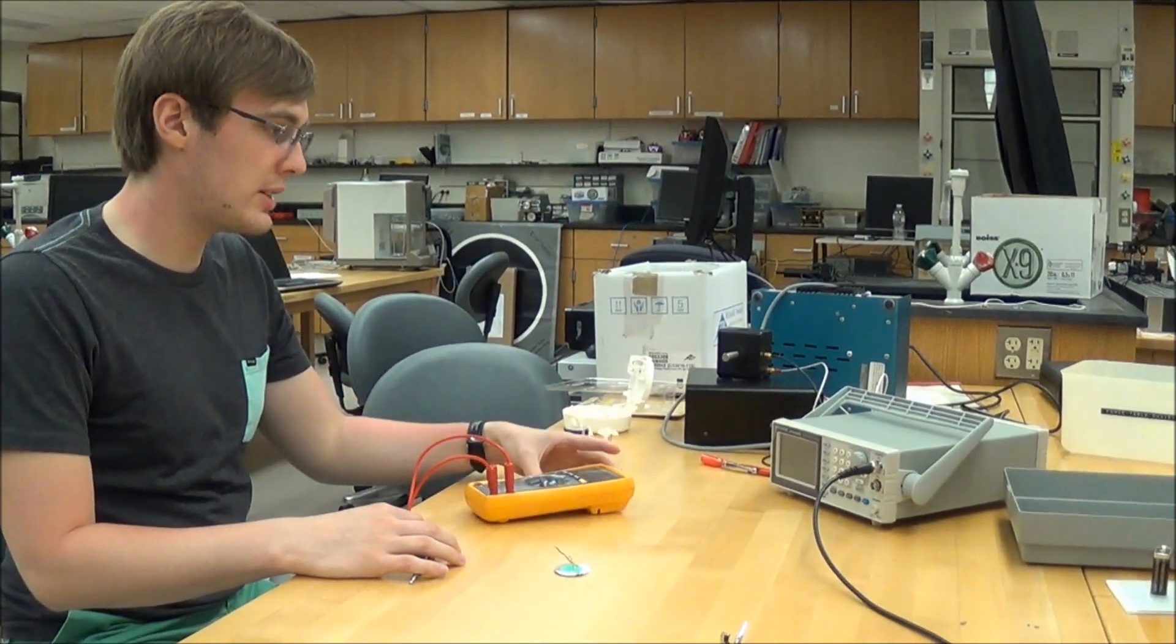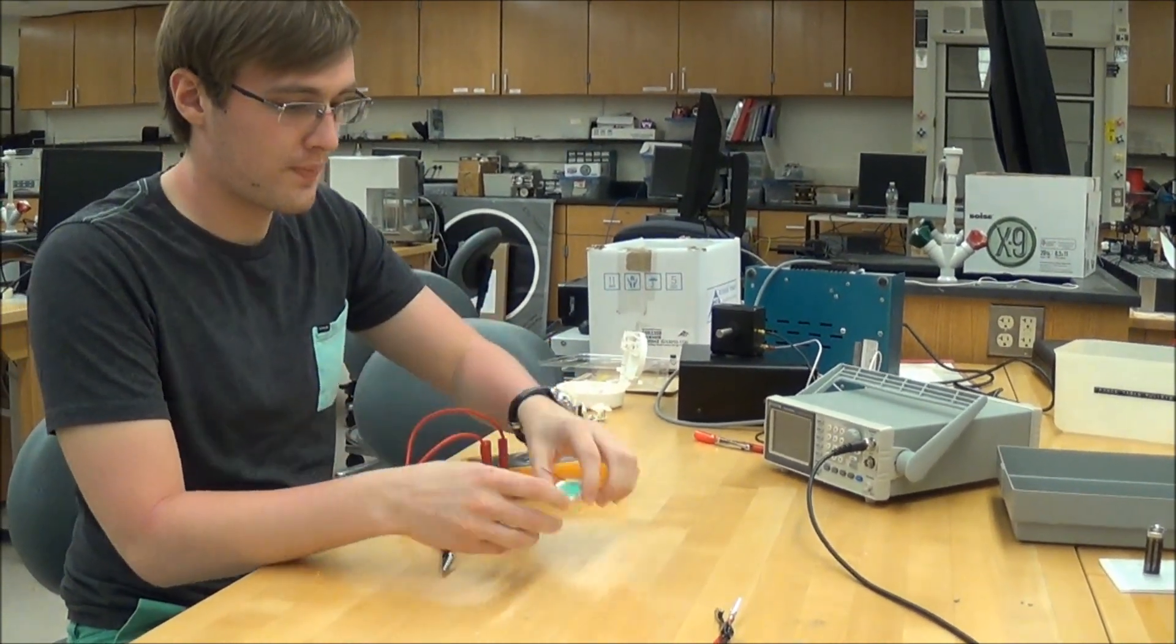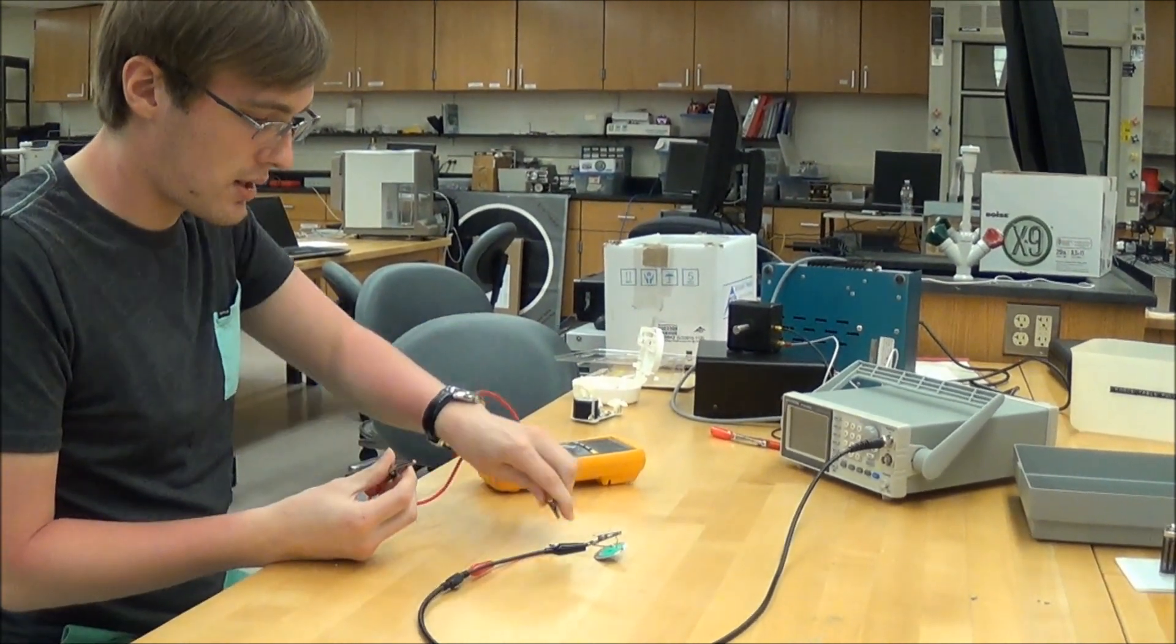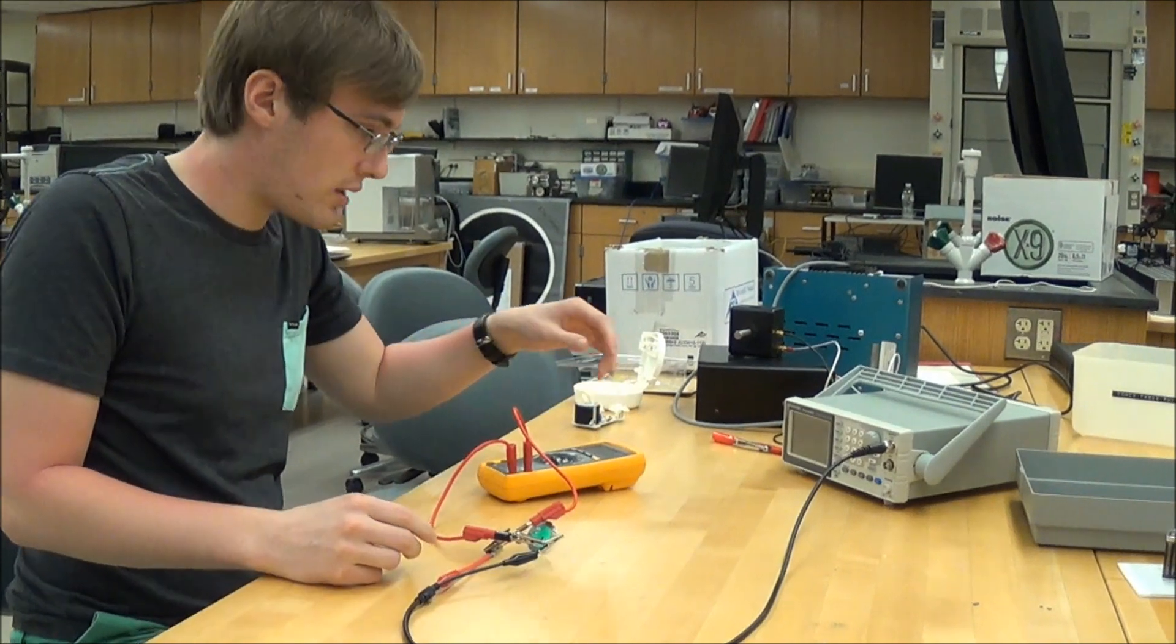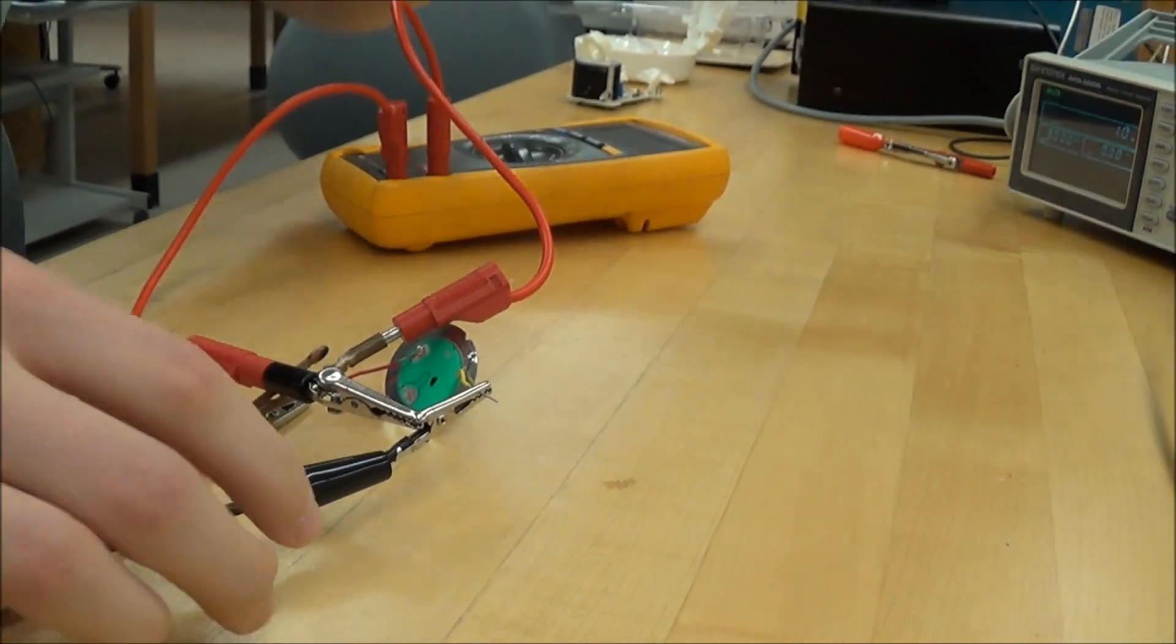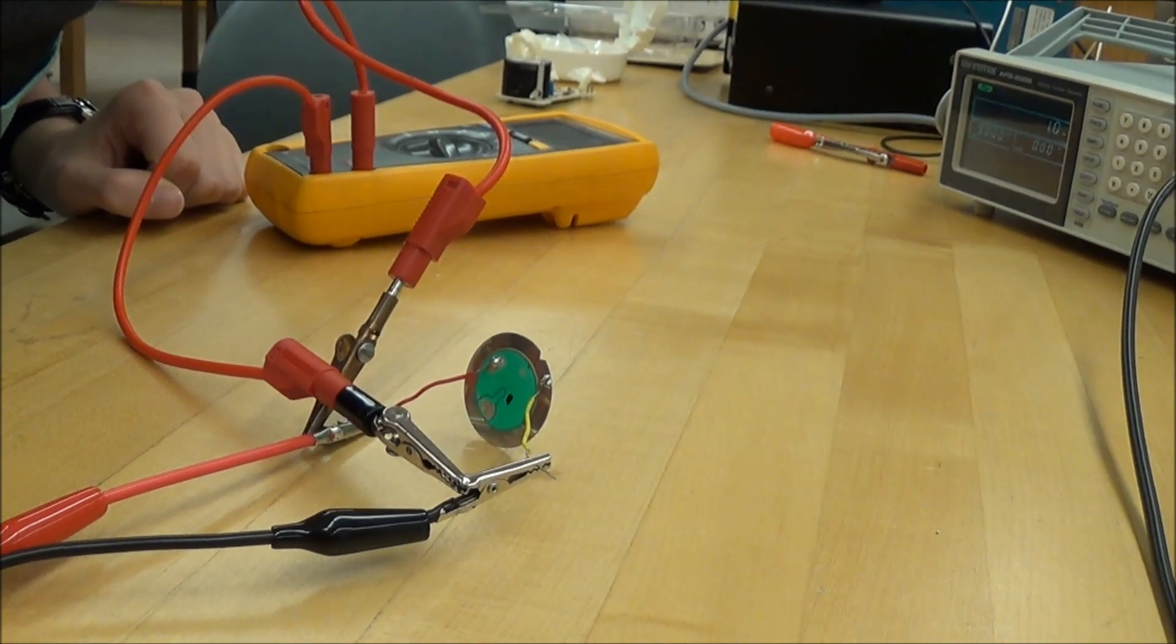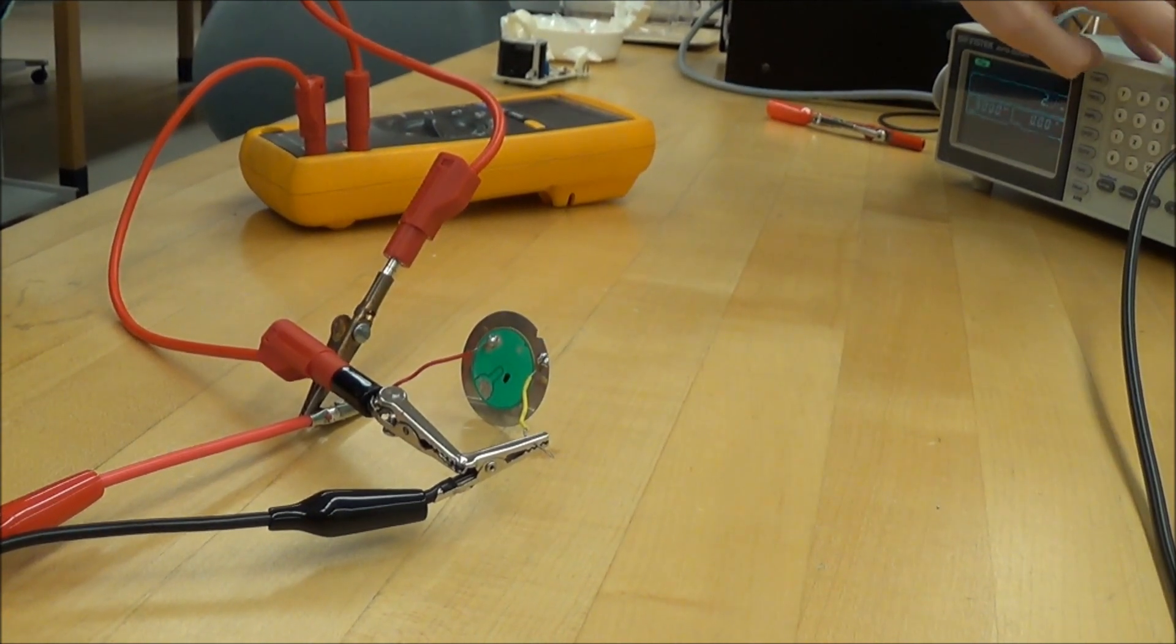So, our setup is the multimeter, the function generator, and the piezo, which we have soldered two wires to. Attach the function generator, attach the multimeter, and just turn on the function generator. Starting at one hertz. You probably can't hear it right now, but I hear a tick at that speed. So, if we ramp up the hertz a little bit, the ticking gets faster.